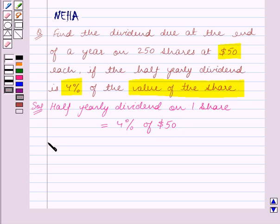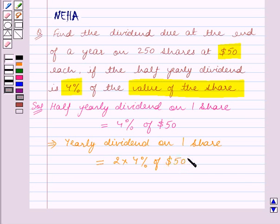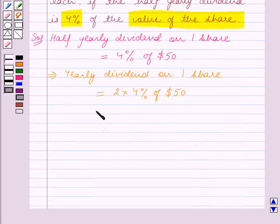So this implies the yearly dividend on one share is equal to 2 times 4% of $50. This is equal to 8% of $50.